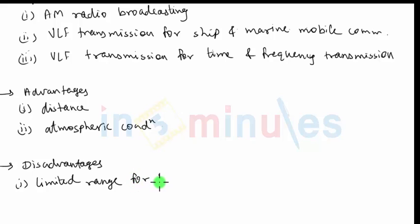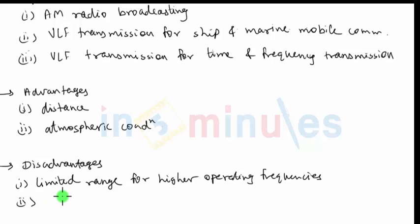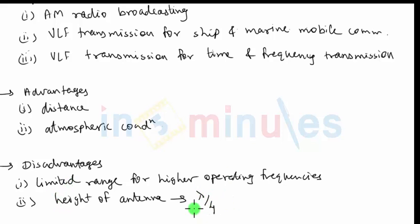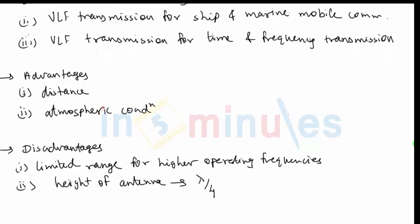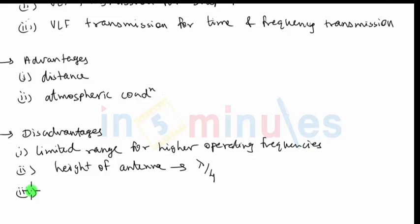The second disadvantage is that at low frequencies, very tall antennas must be used. The antenna height should be at least lambda by 4. From the formula of field strength and the received voltage signal, we can conclude that only when the antenna height is lambda/4 will proper radiation and reception take place. Since lambda increases for low frequencies, where ground wave propagation is most suitable, the antenna height will also be very large.